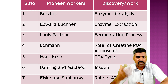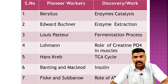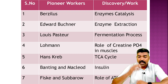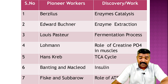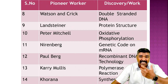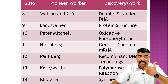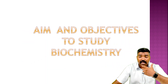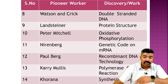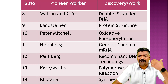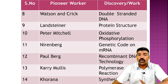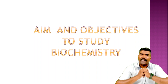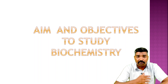There is a list of pioneers who worked and made key discoveries in biochemistry: Berzelius on enzyme catalysts, Edward Buchner on enzyme extractions, Louis Pasteur, Lohmann, Hans Krebs, Banting and McLeod, Watson and Crick on the DNA model, Perutz, Peter Mitchell, Nirenberg, Paul Berg, and Khorana. Their discoveries include double-stranded DNA, protein structure, oxidative phosphorylation, the genetic code of mRNA, recombinant DNA technology, and many more.